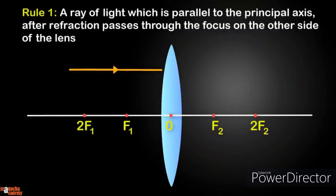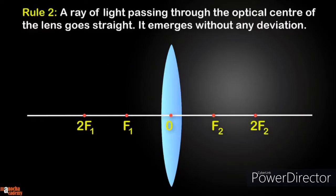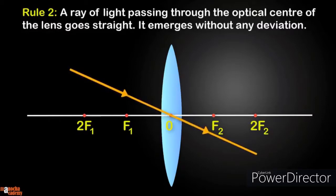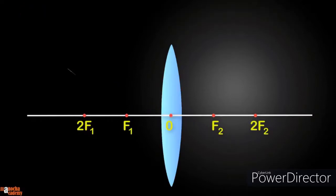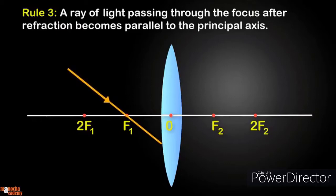Rule one: a ray of light which is parallel to the principal axis, after refraction, passes through the focus on the other side of the lens. Rule two: a ray of light passing through the optical center of the lens goes straight — it emerges without any deviation. Rule three: a ray of light passing through the focus, after refraction, becomes parallel to the principal axis.